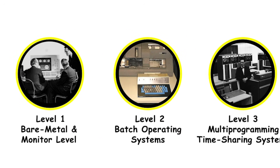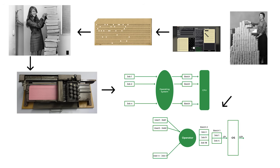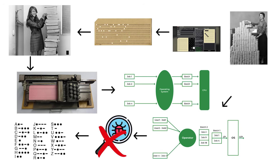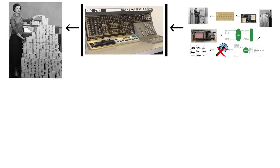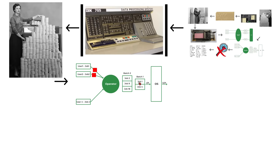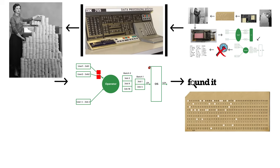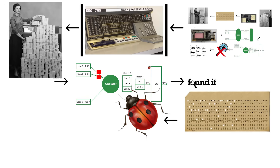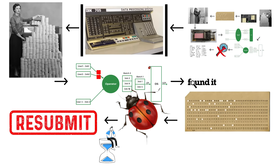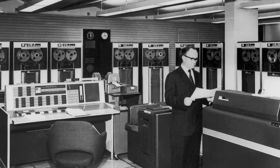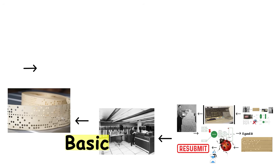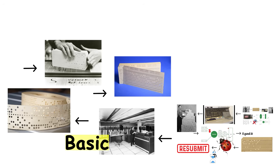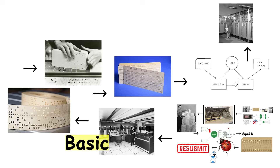But here's what Level 2 people don't understand: batch systems had zero real-time interaction. You couldn't debug your code interactively. You couldn't see what was happening while your program ran. You just submitted your job and hoped it worked. If there was an error, you'd find out hours later when you got your printout. Then you'd fix the bug, resubmit, and wait hours again. The OS in batch mode loaded jobs from tape or cards, executed them one at a time, wrote output, and moved to the next job.